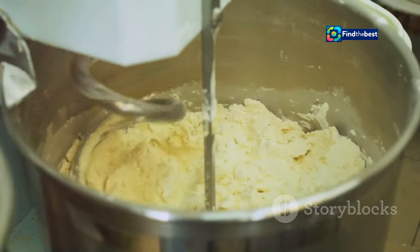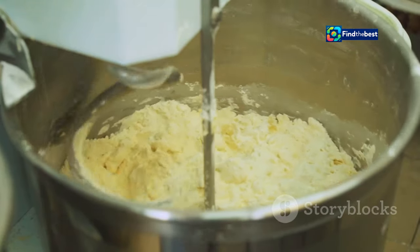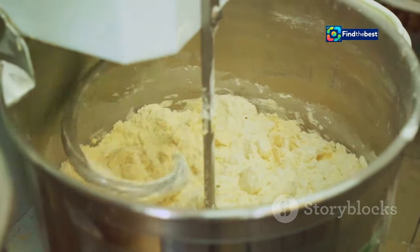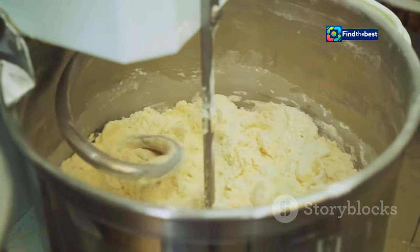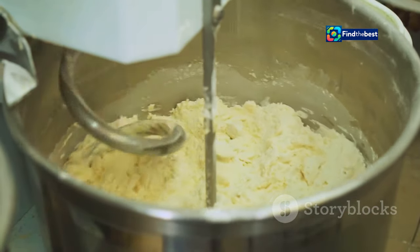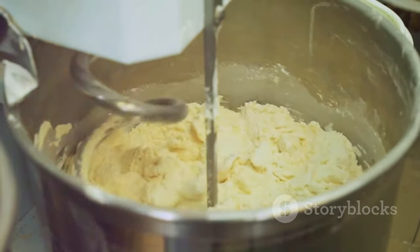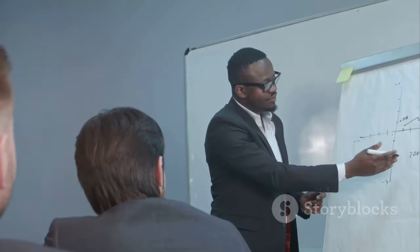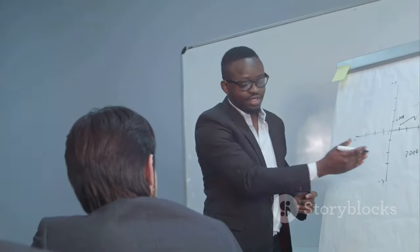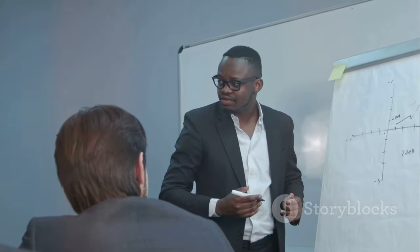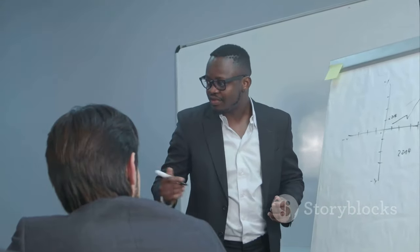For example, in a video about baking cookies, one section might discuss high-quality ingredients. Clear transitions signal to your audience that you are moving on to a new aspect of the topic.